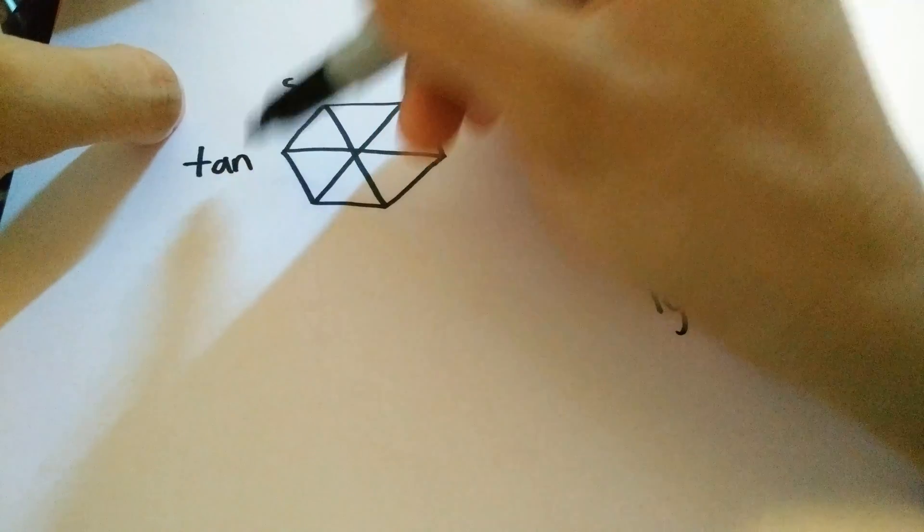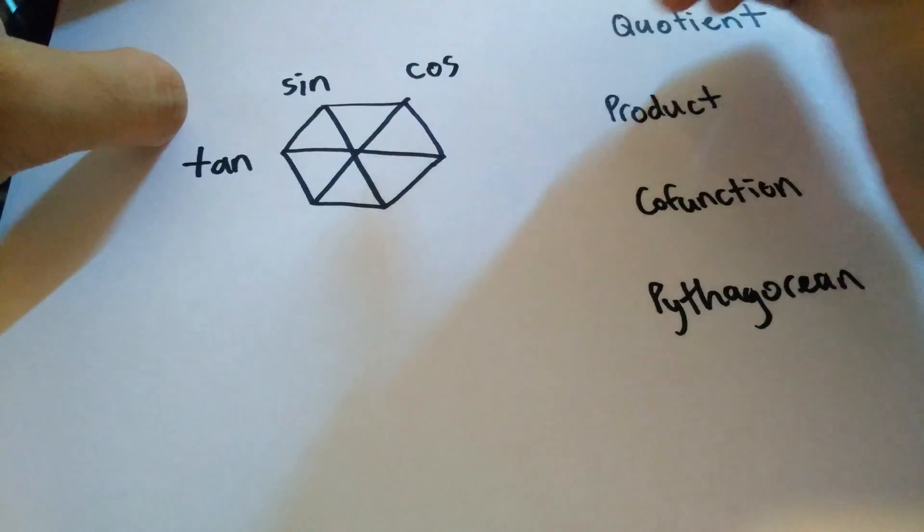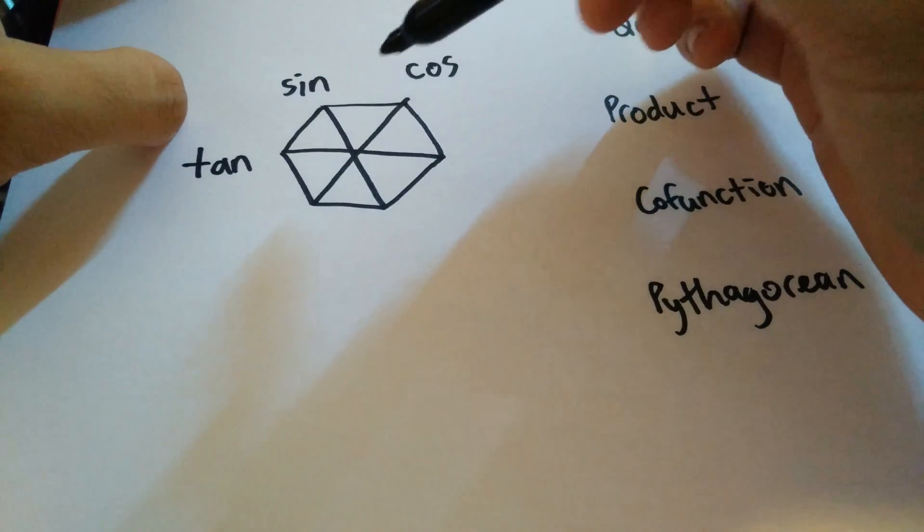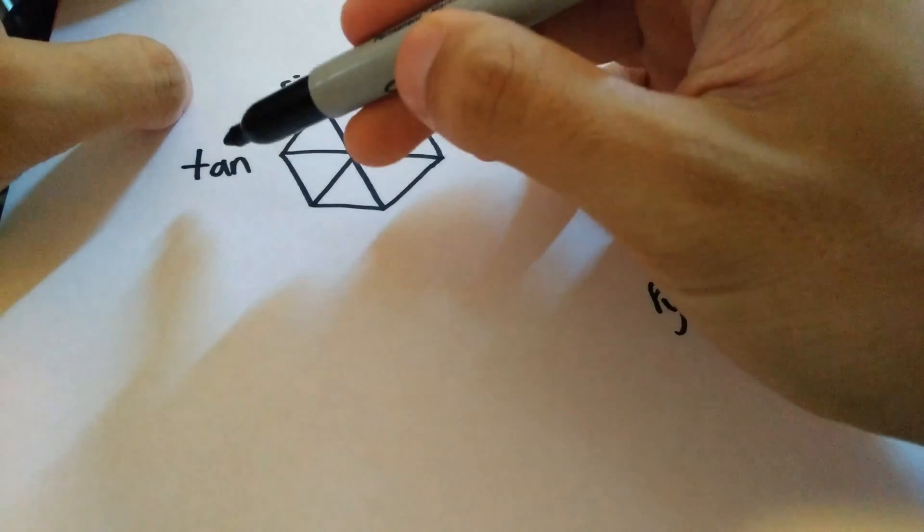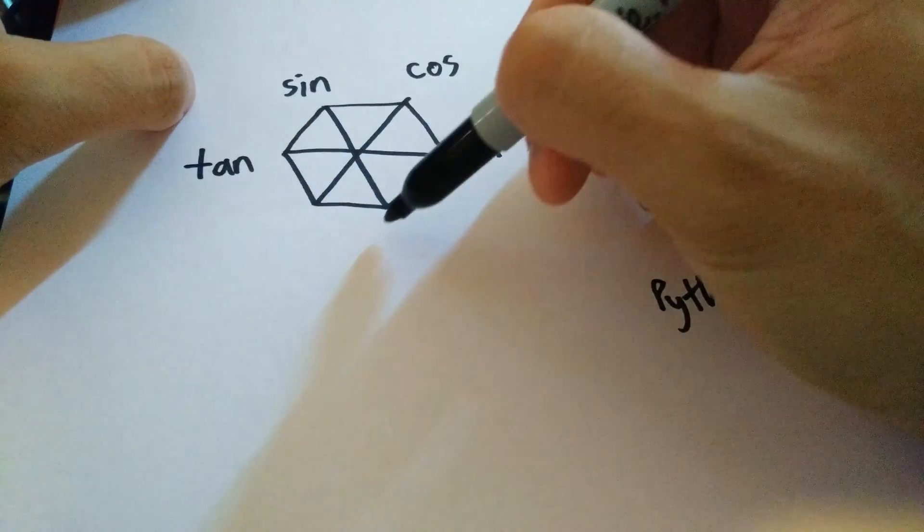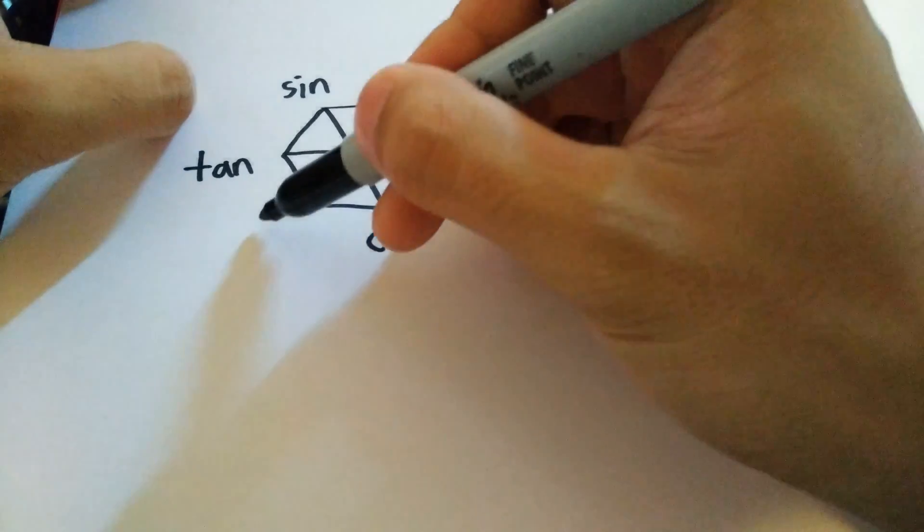T stands for tangent, S stands for sine, and C stands for cosine. The opposite ends of these, the opposite vertices, are just the reciprocals of each function. The reciprocal of tangent is cotangent, the reciprocal of sine is cosecant, and the reciprocal of cosine is secant.